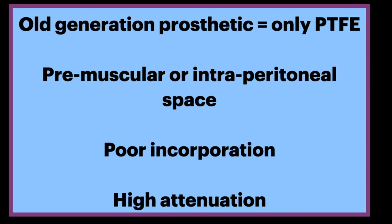Some patients operated on a long time ago may still have old generation prosthetic mesh made of only PTFE. They can be located in pre-muscular or intraperitoneal space. They are not really used anymore because of their poor incorporation inside the abdominal wall and limited commercial availability. They are well visible on CT due to their high attenuation value.